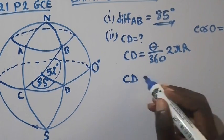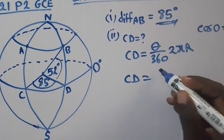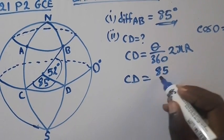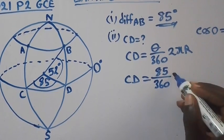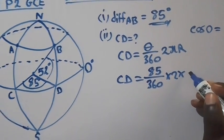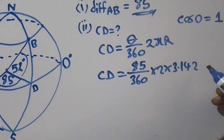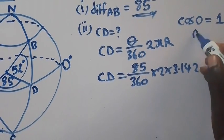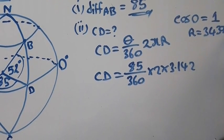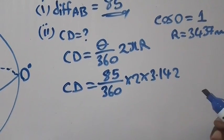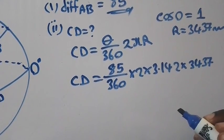So CD equal to, the difference between C to D is 85 degrees over 360 times 2 times pi, 3.142, times radius in nautical miles. Radius in nautical miles is 3,437 nautical miles. That's the radius.